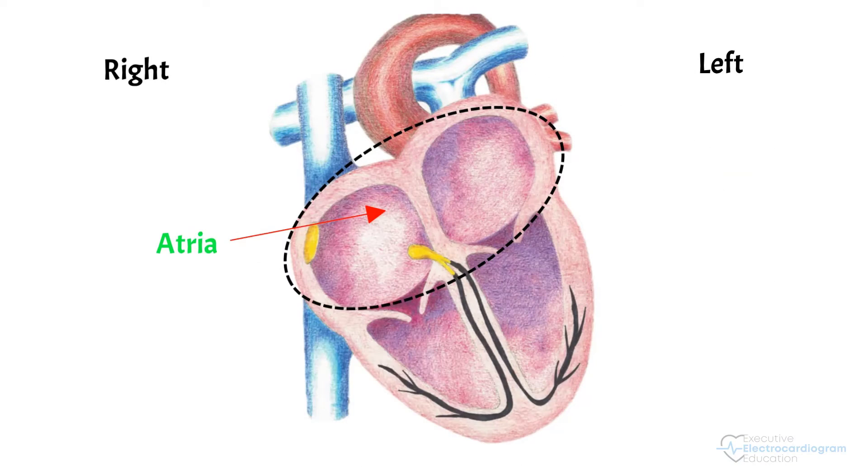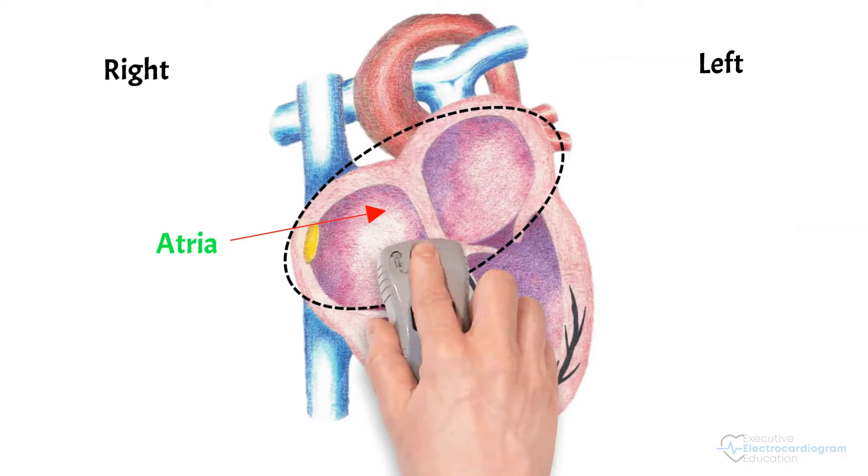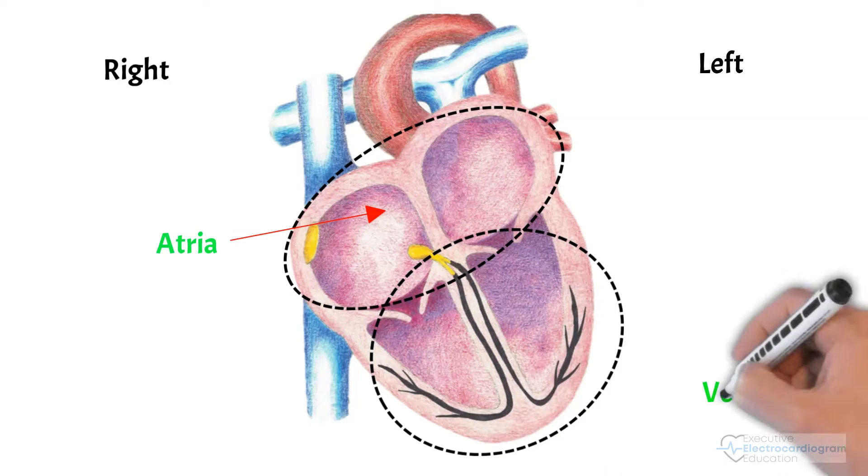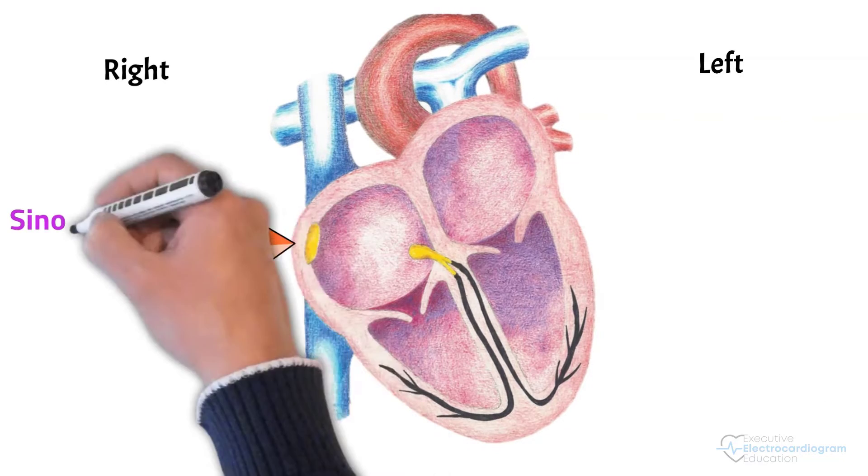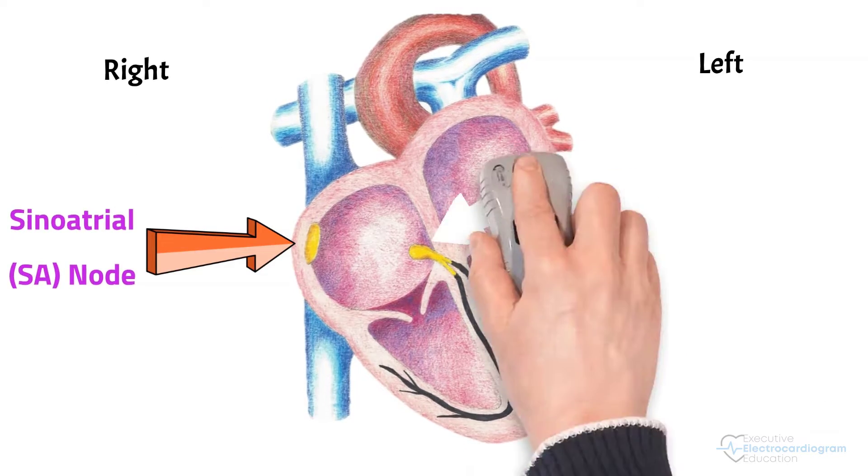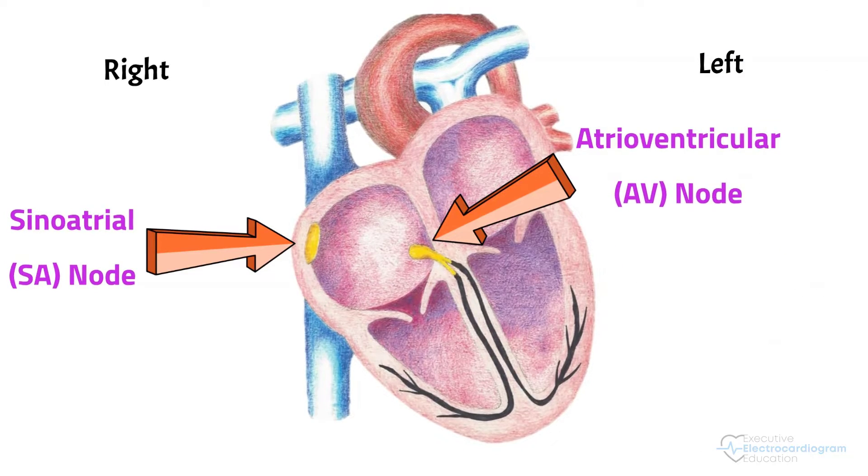The upper chambers represent the atria or receiving chambers, and the lower chambers represent the ventricles or pumping chambers. This spot here is the sinoatrial or SA node, and this area here is the atrioventricular or AV node.